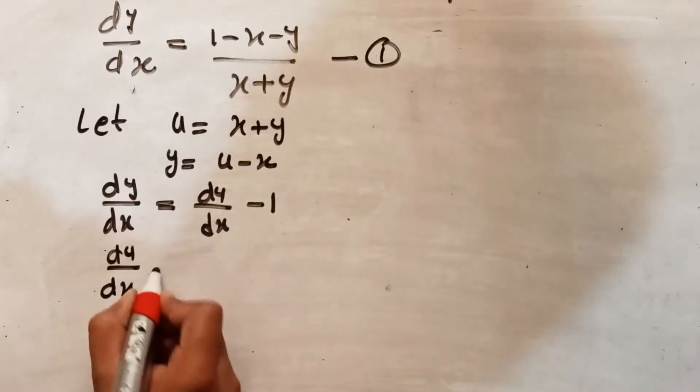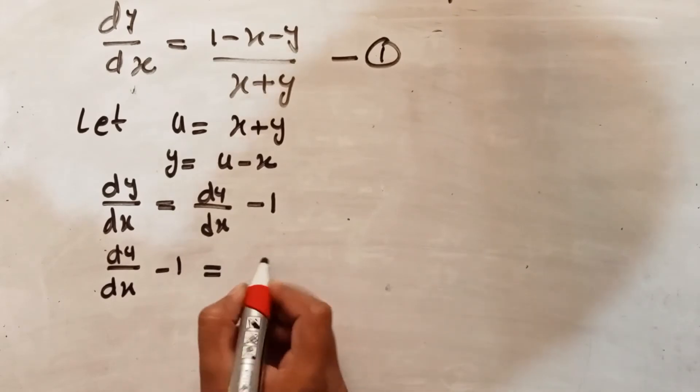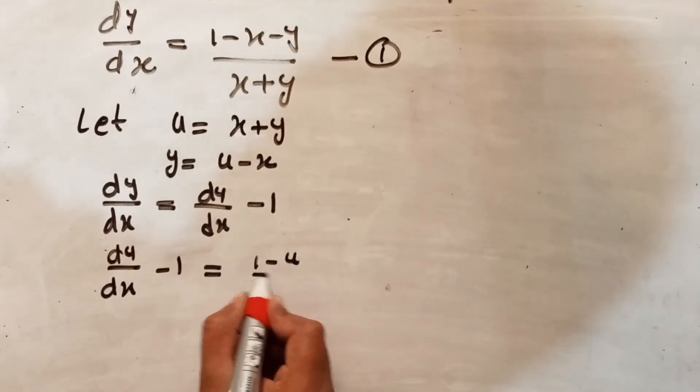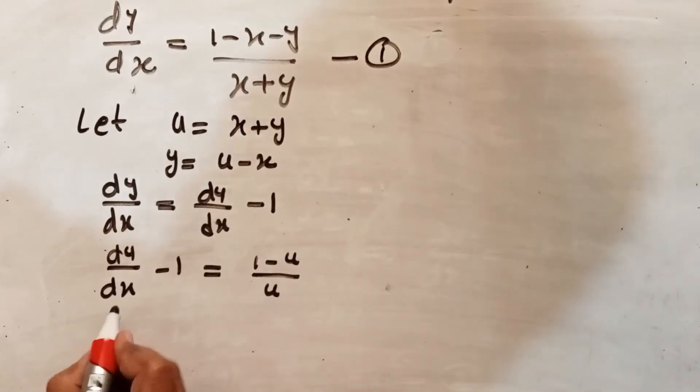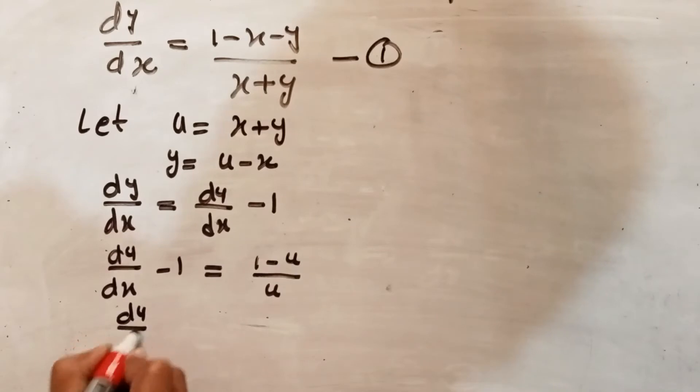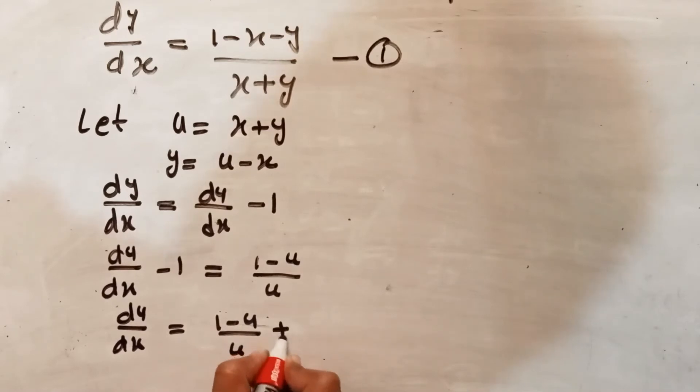Which implies du over dx is equal to 1 minus u divided by u plus 1, which is equal to 1 over u.